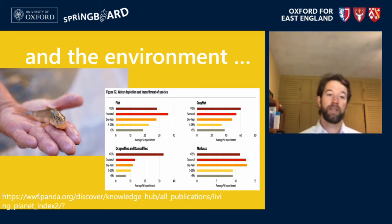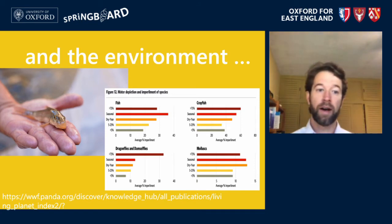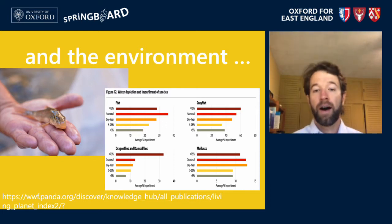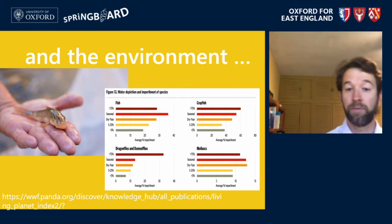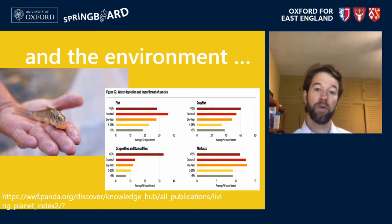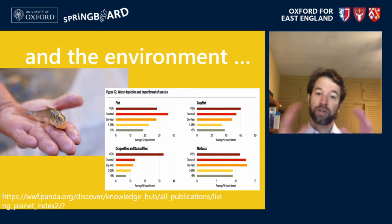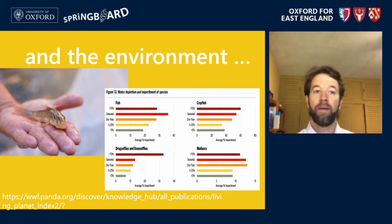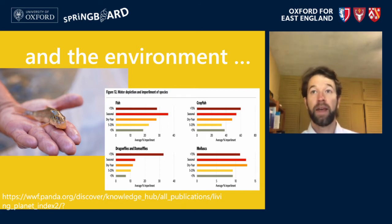In addition to people, water scarcity affects the environment. You may have heard of the Living Planet Index, which is essentially an index of species around the world kept by WWF. The long story short is that globally, freshwater species are imperiled — and they are much more imperiled than their terrestrial counterparts.